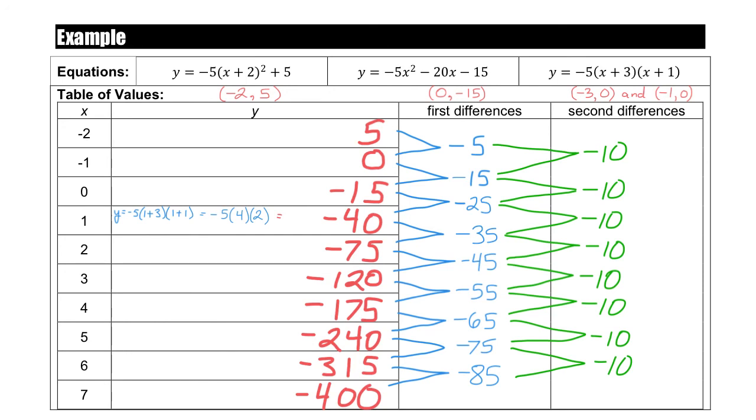To summarize: if you make a table of values and the first differences are all identical, you're dealing with a linear relation. If the first differences are not all the same, calculate the second differences — if those are all equal, you're dealing with a quadratic relation. If the second differences are not the same, you're dealing with some other type of relation we haven't talked about yet. You can move on to the practice questions, or let me know how I can help.